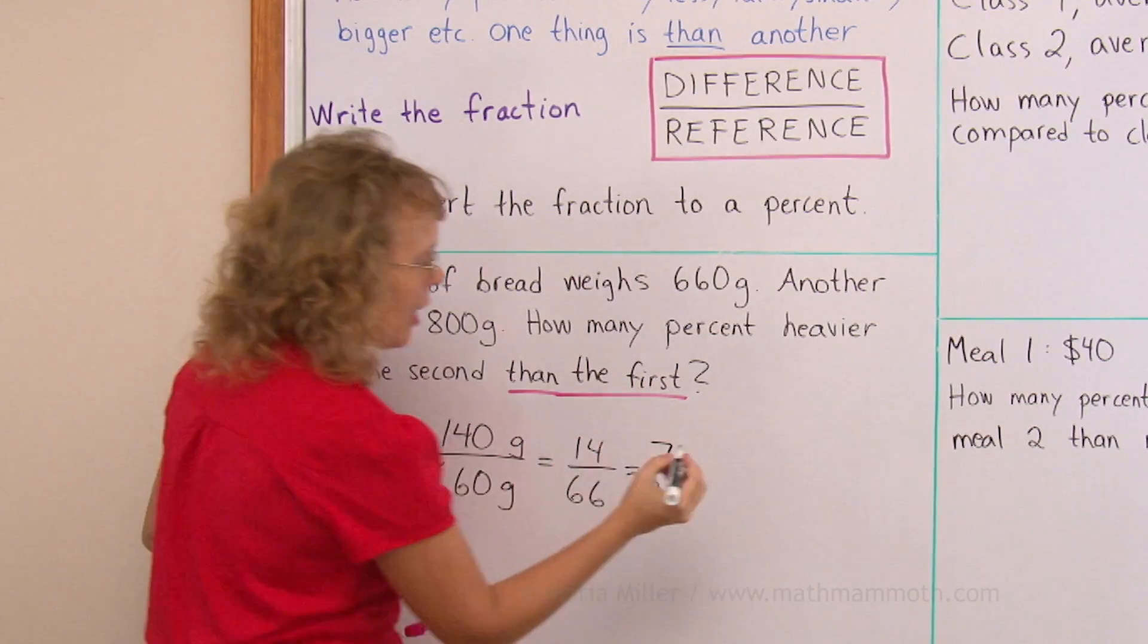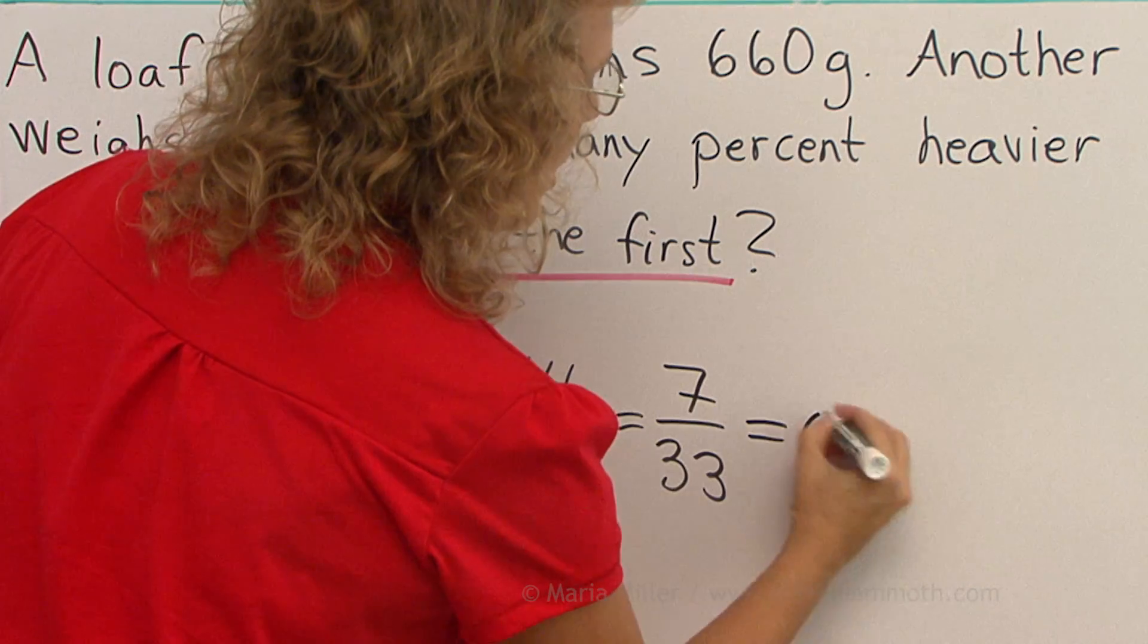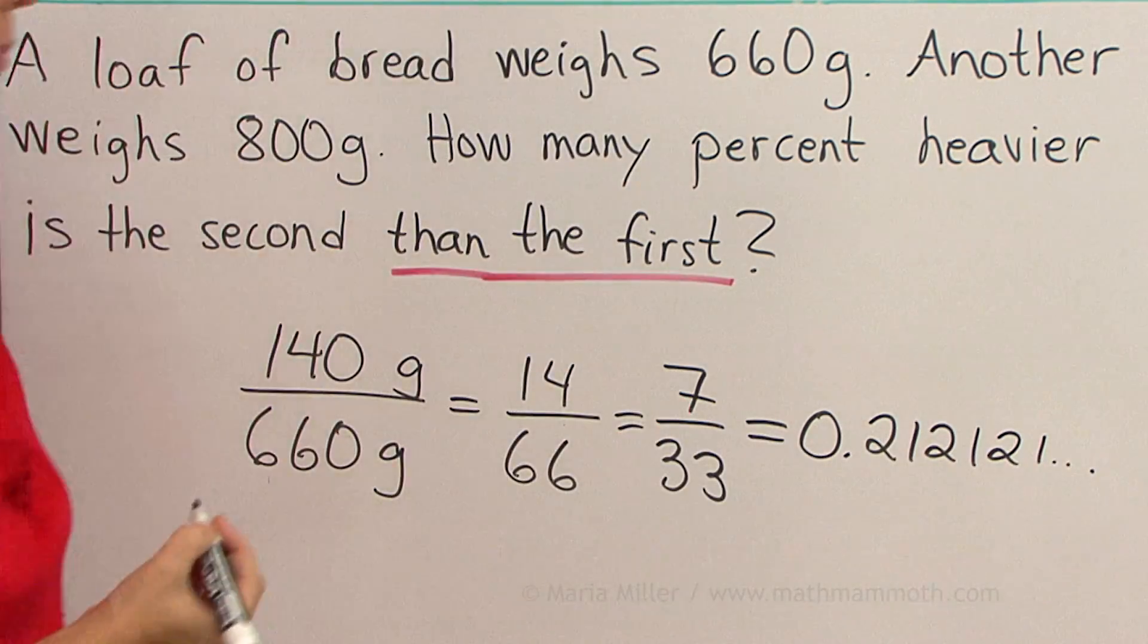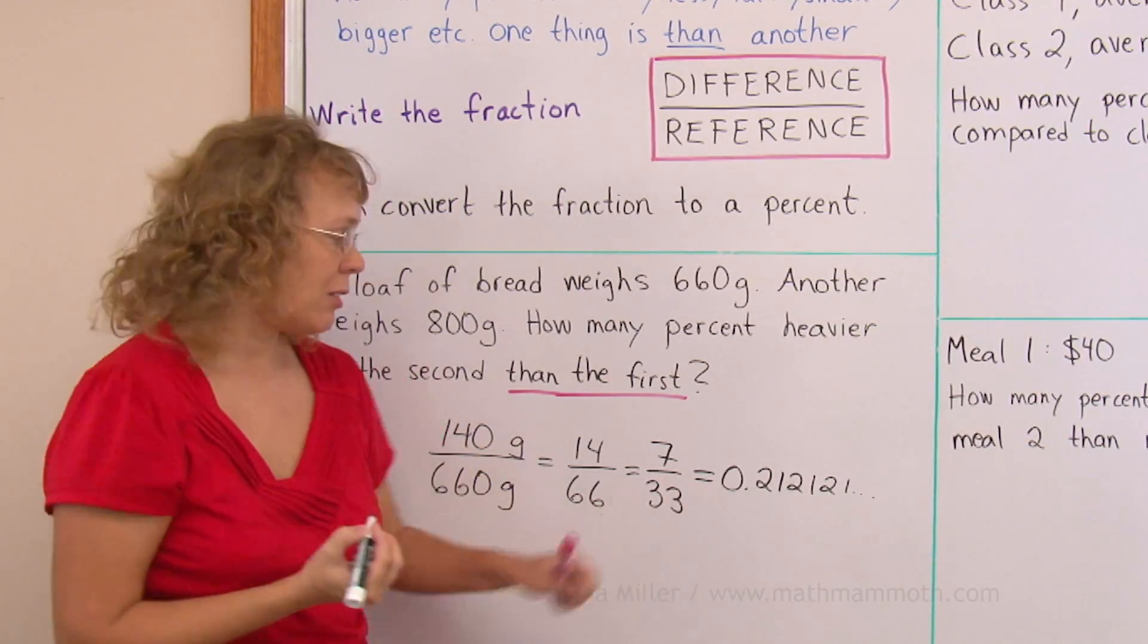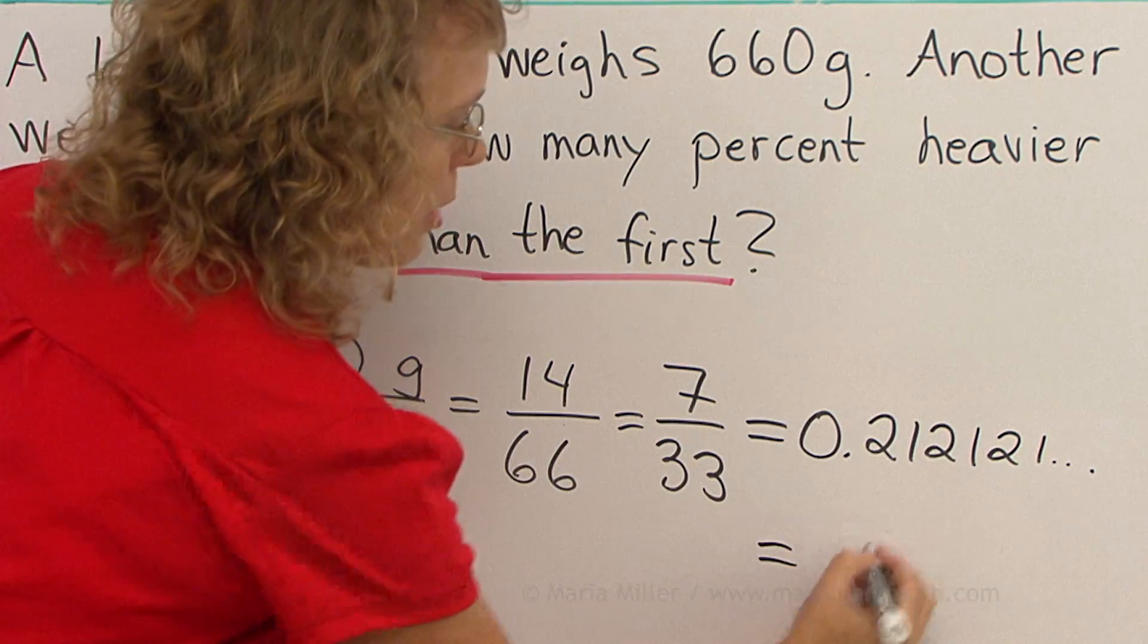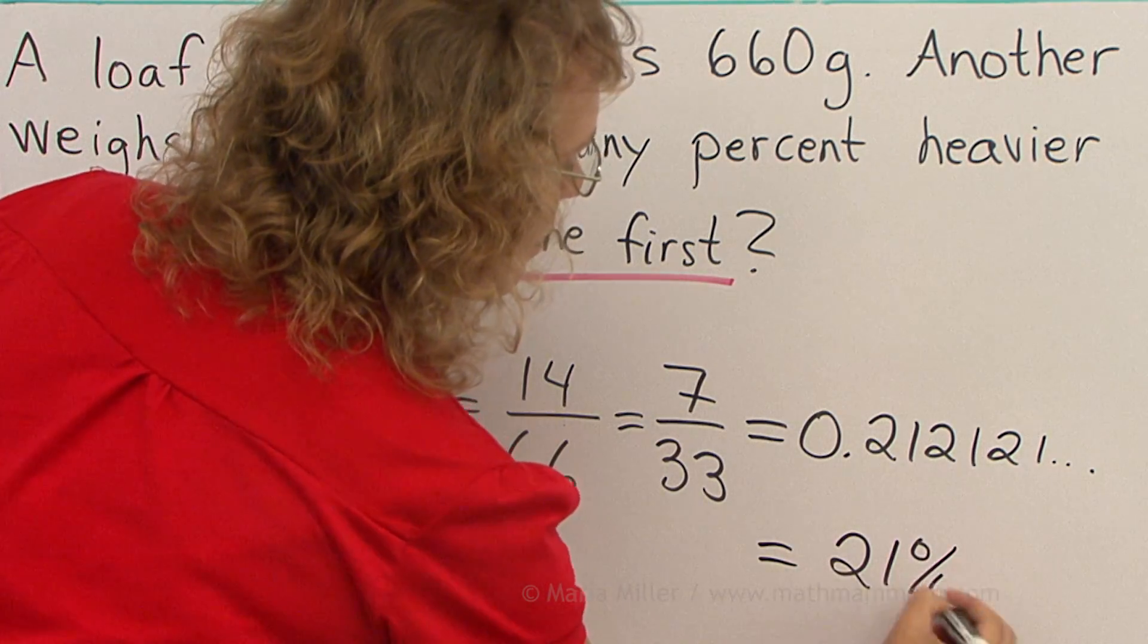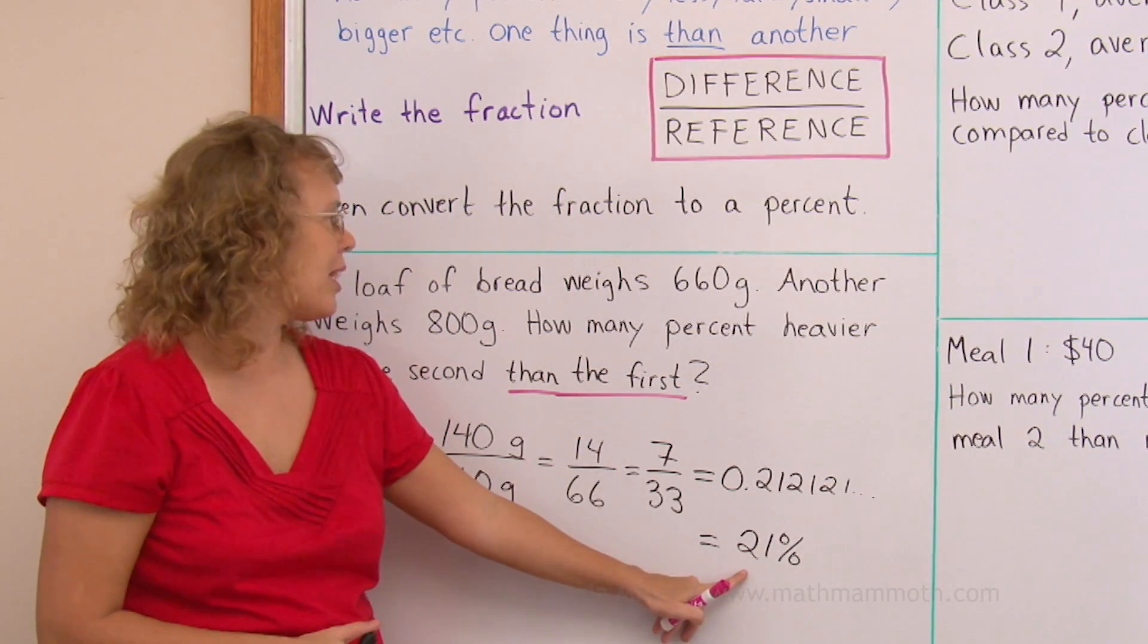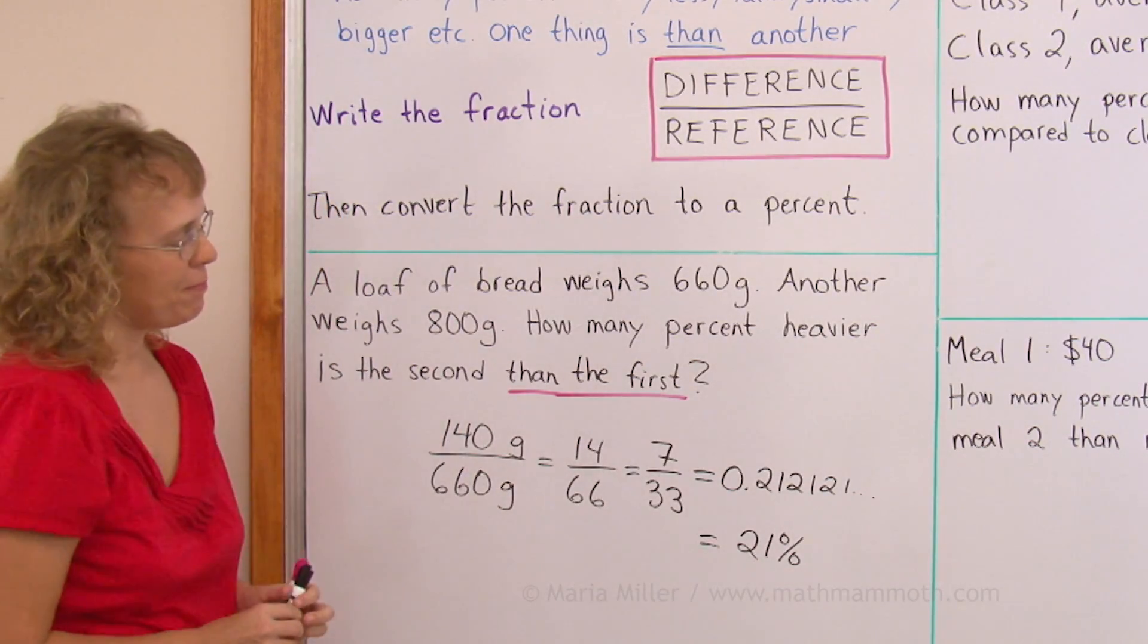And from the calculator we get 0.212121 repeating. And so this as a percent now is 21%. So the second bread is 21% heavier than the first bread. About one-fifth.